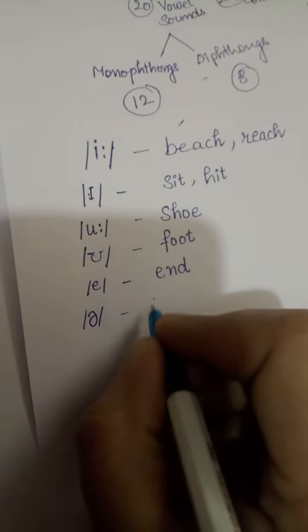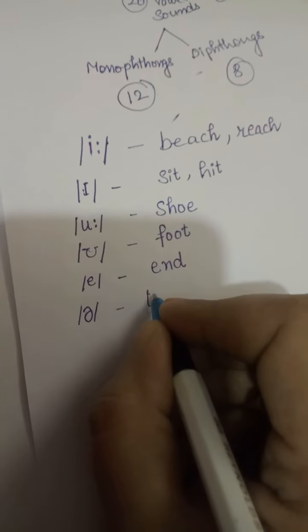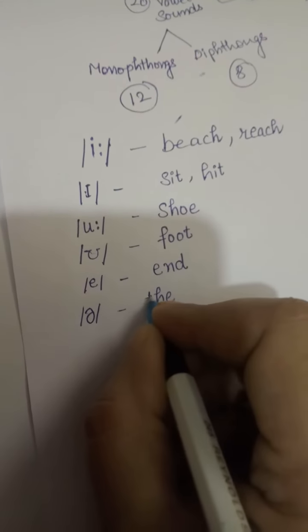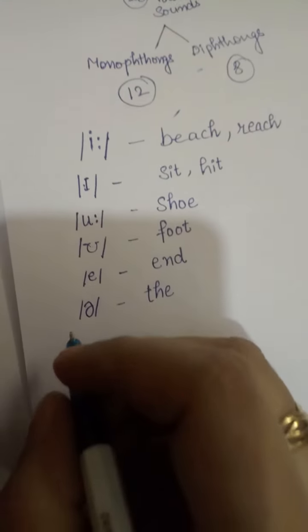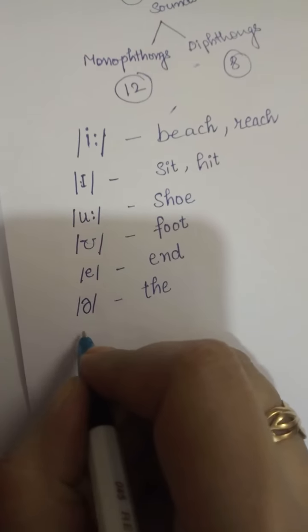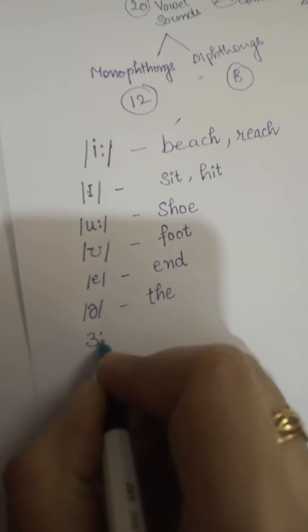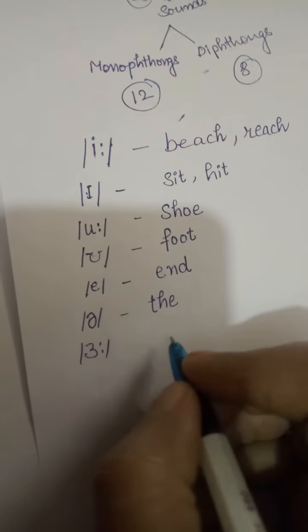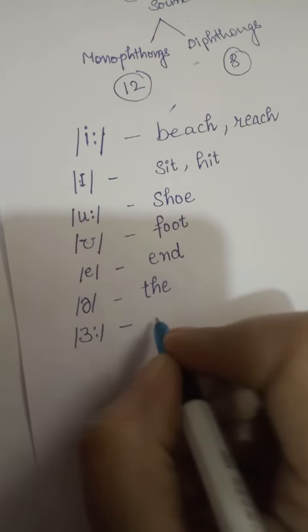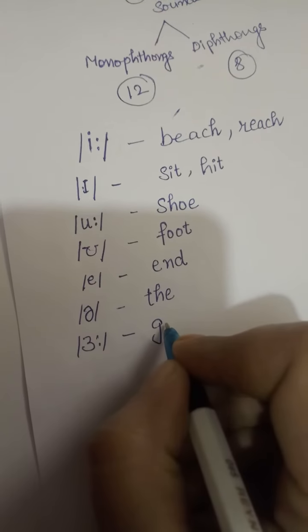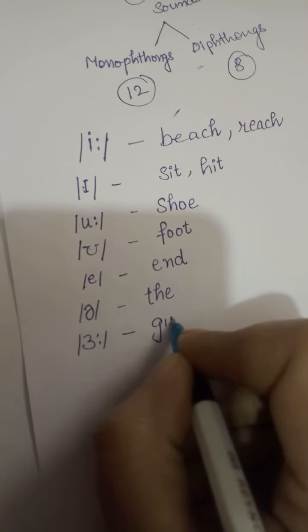Next is the short 'oo' sound as in 'foot.' Then there is the schwa sound as in 'the,' and the 'er' sound as in 'organized.'